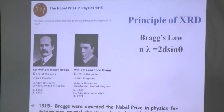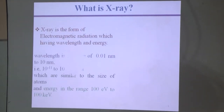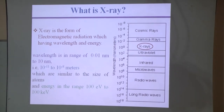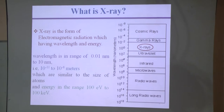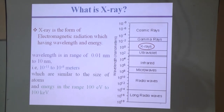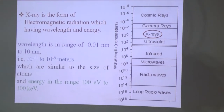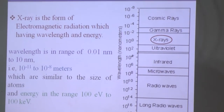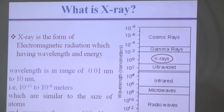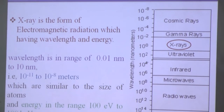The famous Bragg's law is: lambda equals 2d sin theta. There are two Braggs, which is why we say Bragg's law. XRD involves X-ray diffraction. X-rays are a form of electromagnetic radiation with wavelength from 0.01 to 10 nanometers, very similar to the size of atoms. So if you have nanoparticles, you can diffract X-rays very easily and establish their structure.